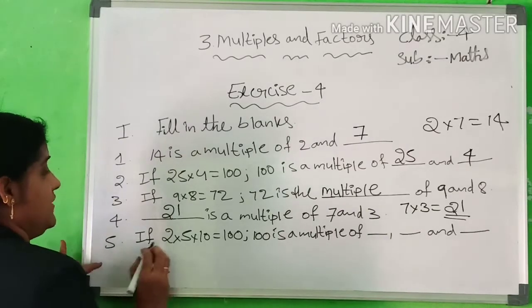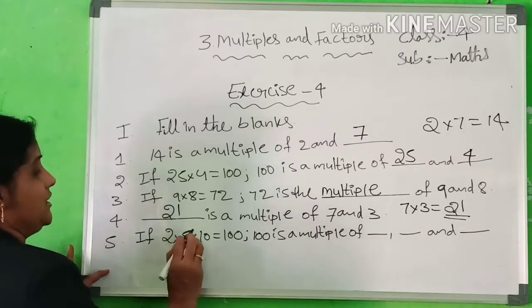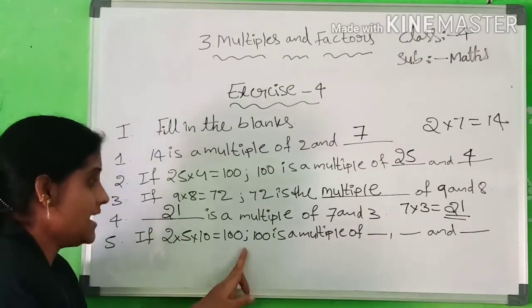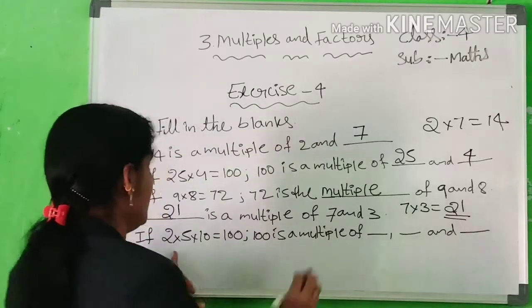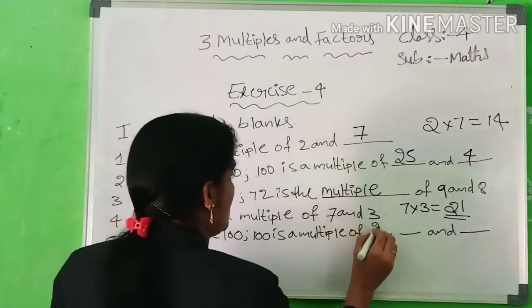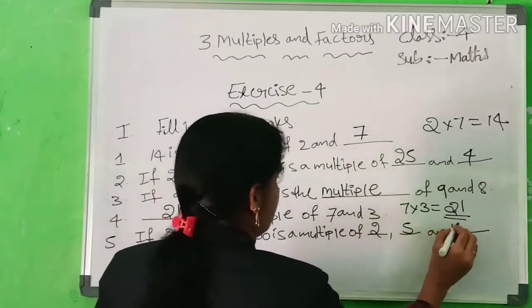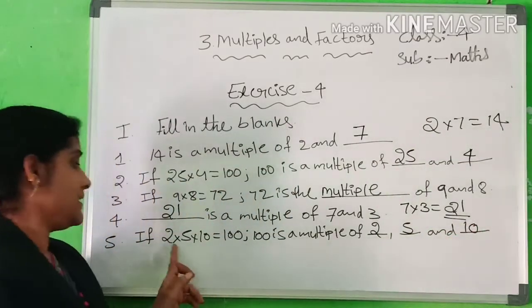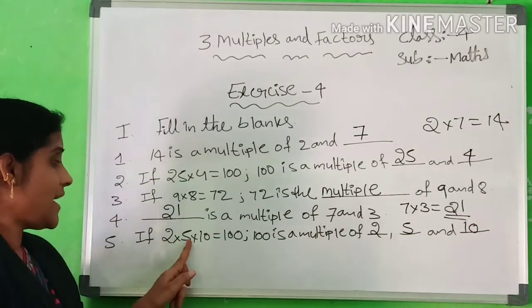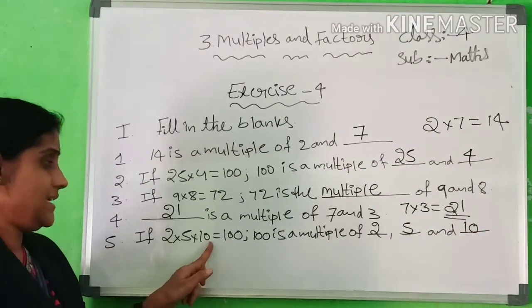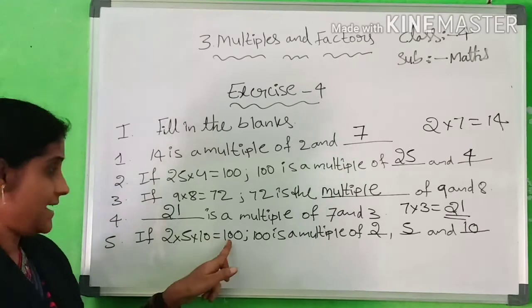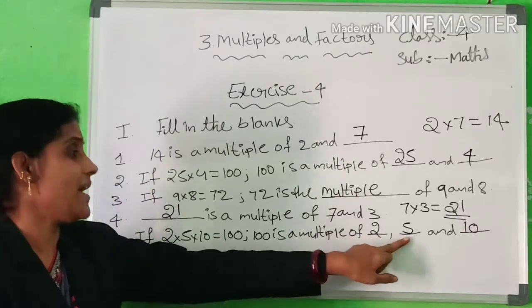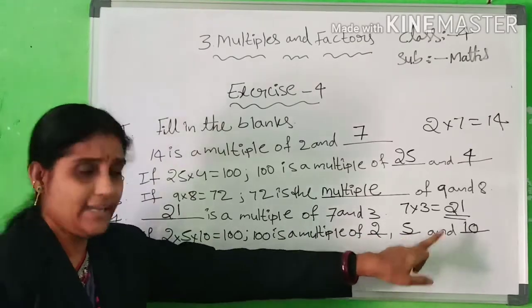Fifth one: if 2×5×10=100, then 100 is a multiple of 2, 5, and 10. Write this one in your notebook.